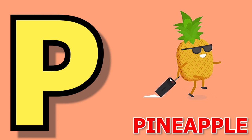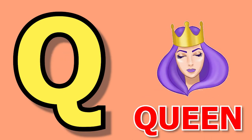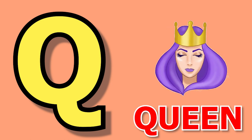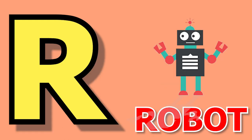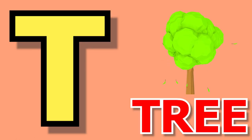P for pineapple, pineapple means ananas. Q for queen, queen means rani. R for robot, robot means robot. S for sunflower, sunflower means suraj mukhi.